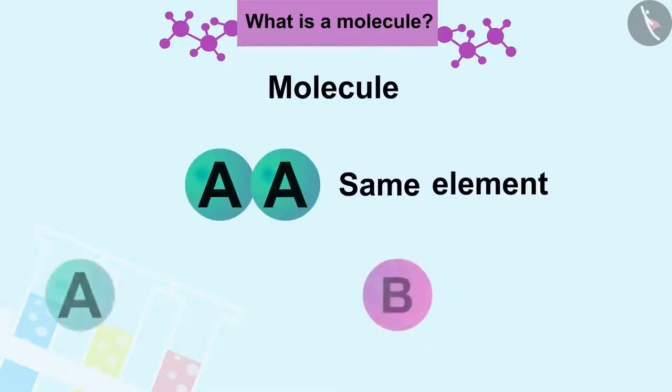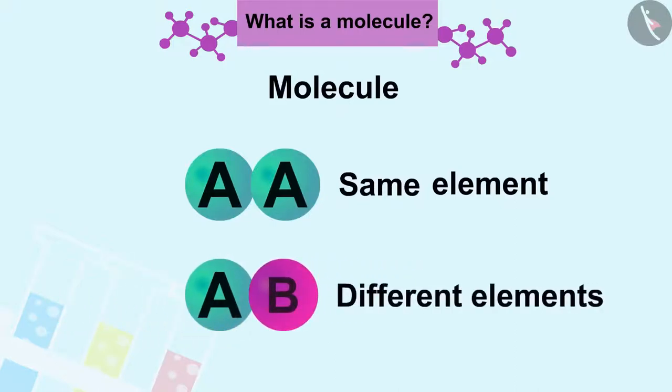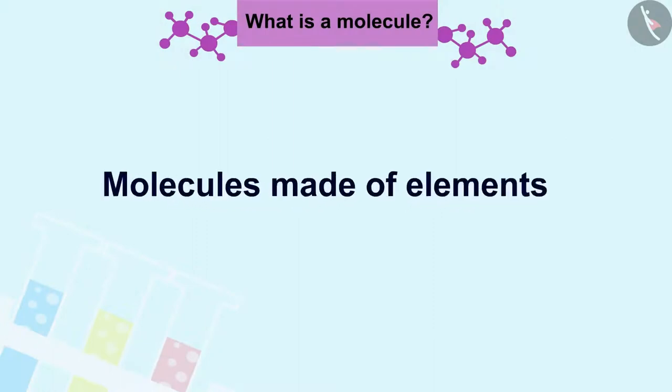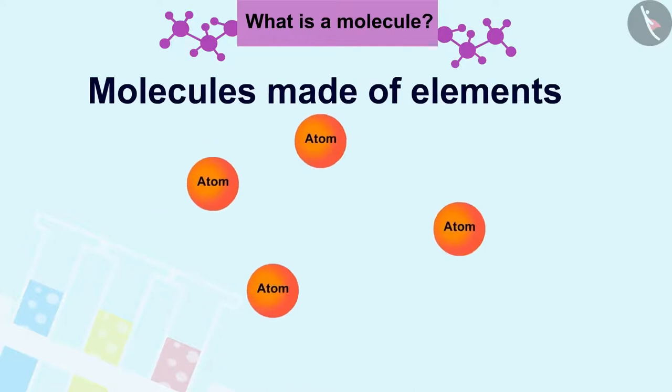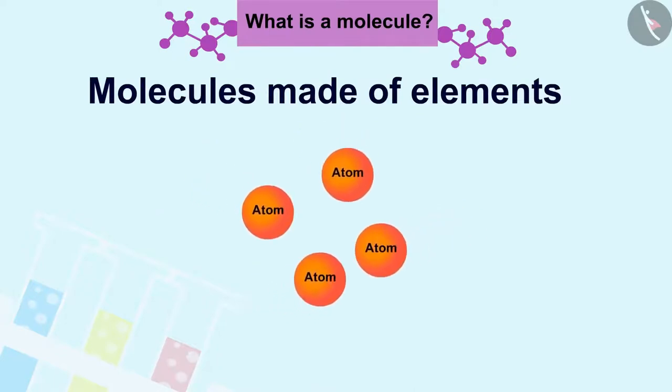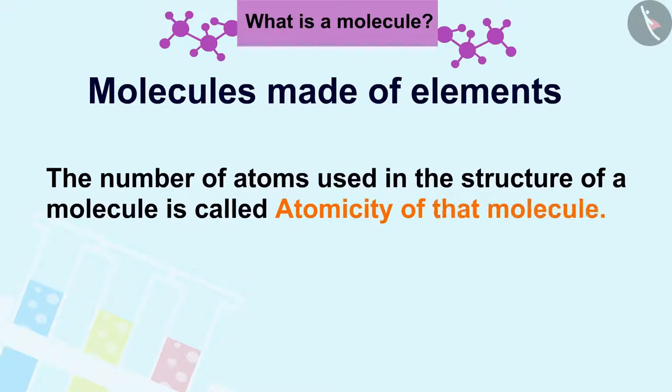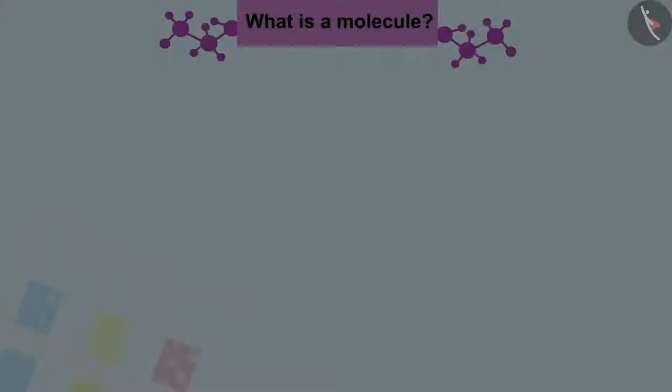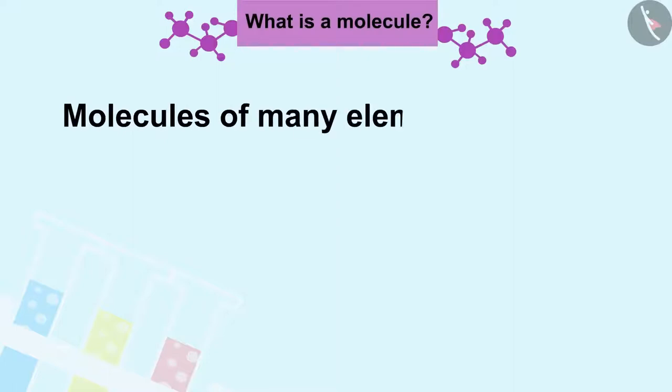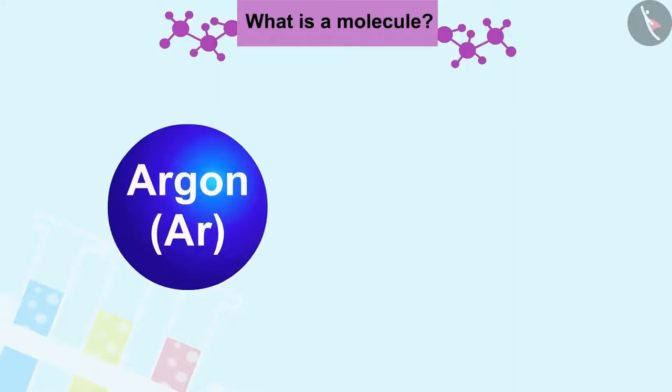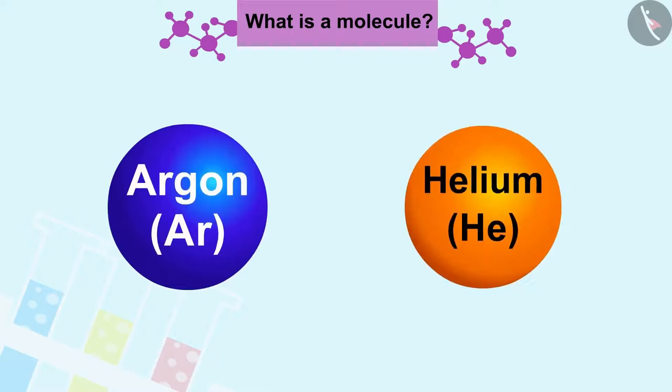Let us first learn about the molecules made of elements. The molecules of an element are structured by the same type of atoms. The number of atoms used in the structure of a molecule is called atomicity of that molecule.